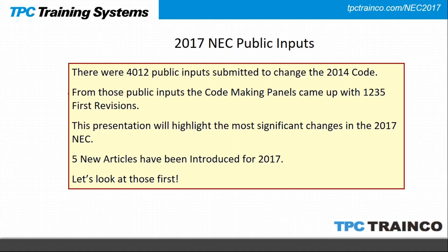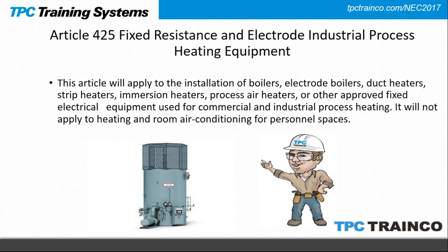The first new article appears in Chapter 4 — Article 425: Fixed Resistance and Electrode Industrial Process Heating Equipment. This covers large-type heating equipment in industrial applications: boilers, electrode boilers, duct heaters, strip heaters, and similar types. It does not apply to heating and room air conditioning for personal spaces. If we are going to install this type of equipment, we need to become very familiar with this article.